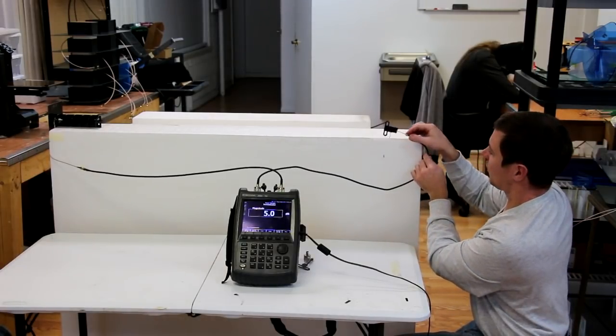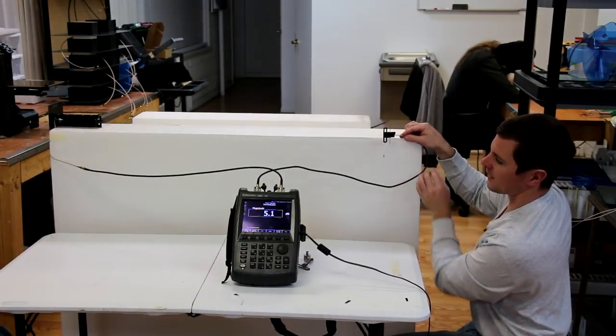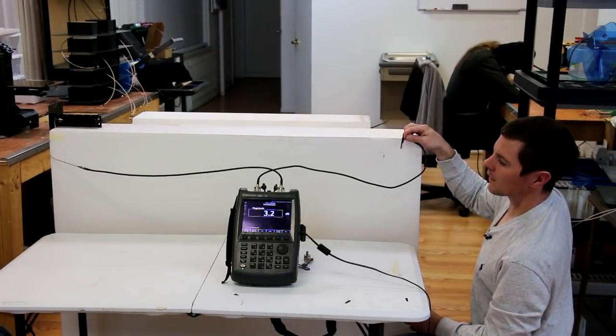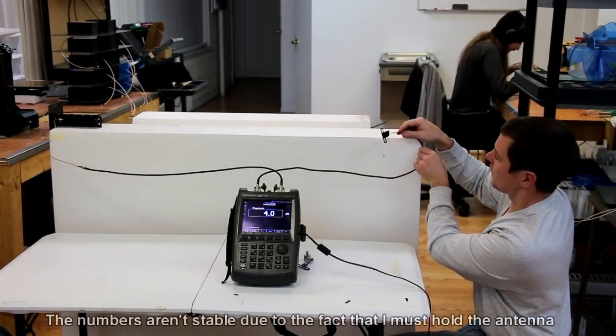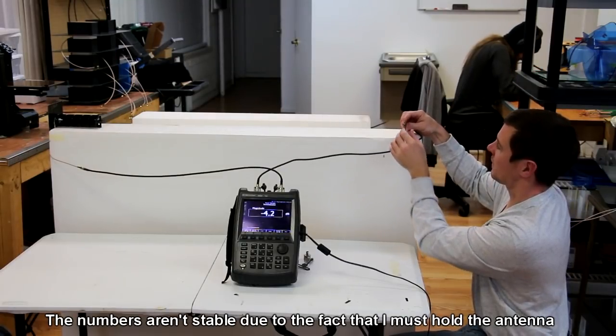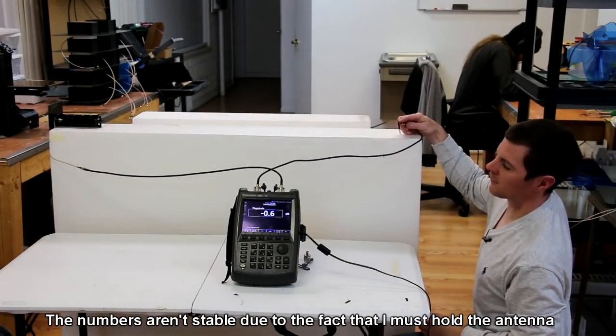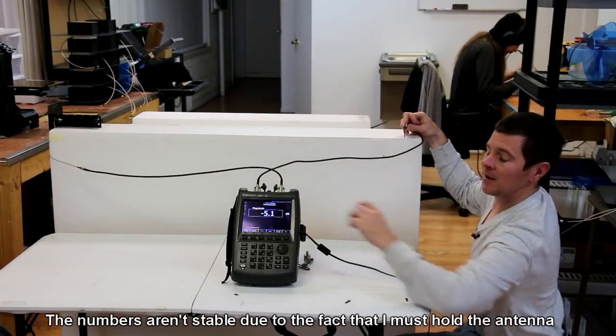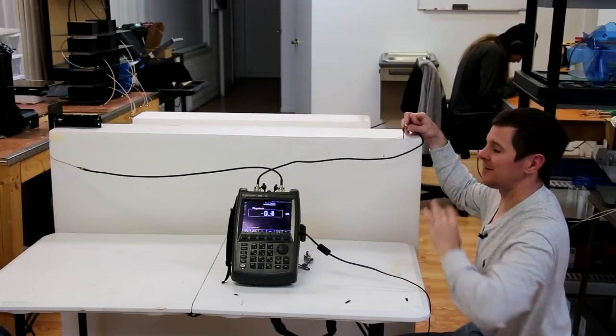But watch what happens when I turn this antenna to the side. Notice that the signal strength begins to drop very greatly. In fact, at 90 degrees, we're at half the power that we were with just the diamond alone.